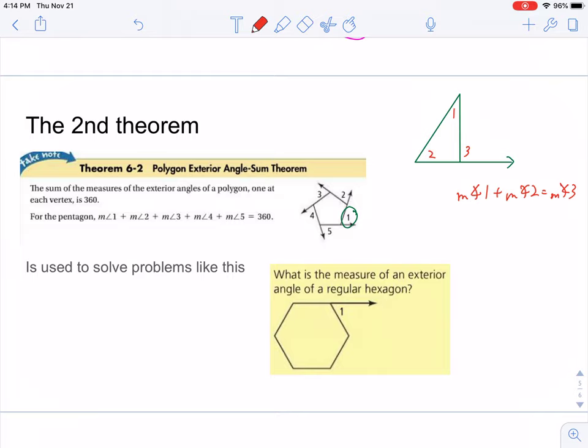With other shapes, it's not quite so simple. But, it turns out there's a special property. If you take all of the exterior angles of a shape and add them together, regardless of what that shape is, it ends up being 360.